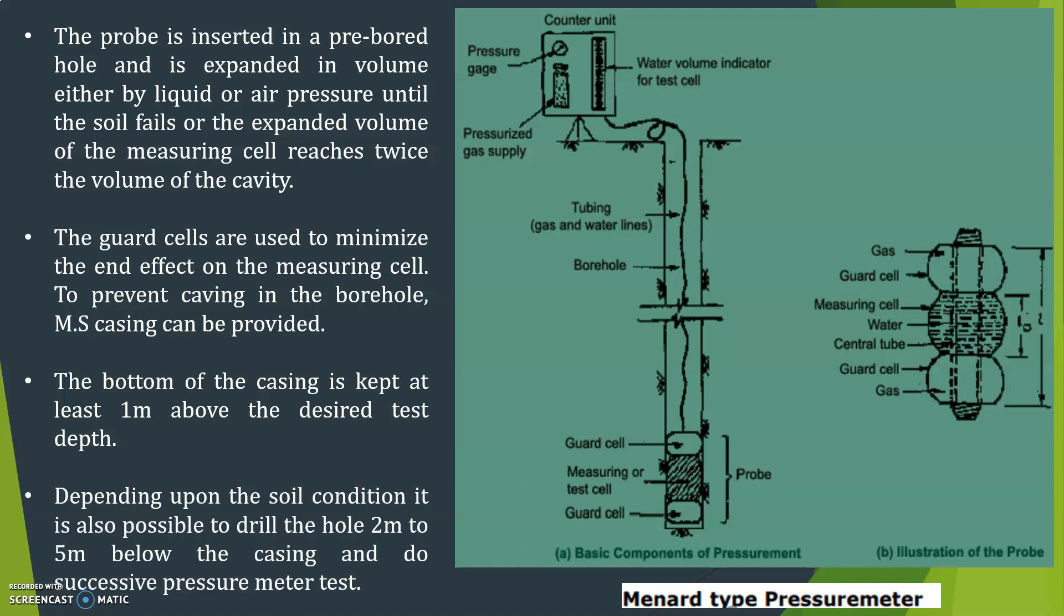Depending upon the soil condition, it is also possible to drill the hole 2 meter to 5 meter below the casing and do successive pressure meter tests.